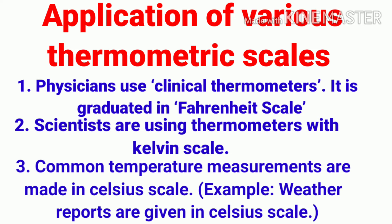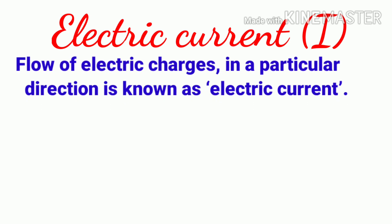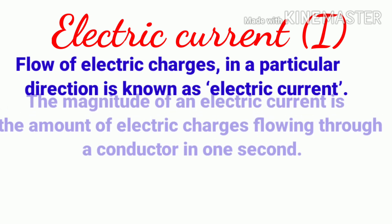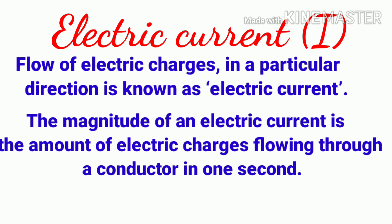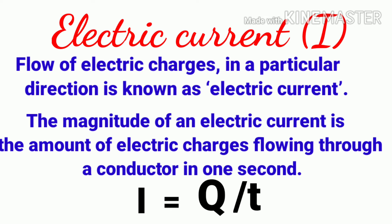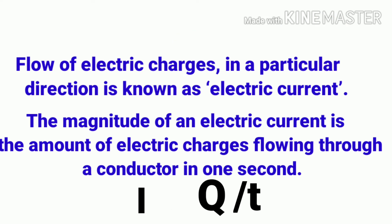Next, the topic of electric current. Electric current is nothing but the flow of electric charge in a particular direction. The magnitude of electric current I is the amount of electric charge Q flowing through a conductor in one second t. The equation is: I = Q / t.